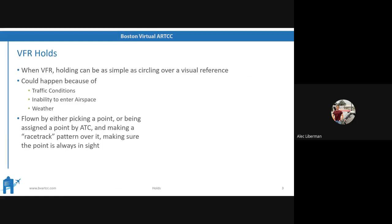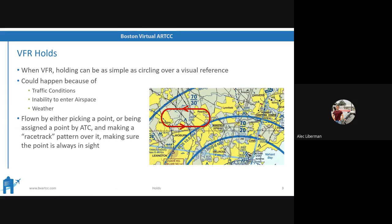VFR holds — this is pretty simple stuff. When you're VFR, holding can be as simple as flying over a reference on the ground visually in a circle. It happens because of traffic conditions, inability to enter airspace, or weather — for example, Oshkosh. Busy traffic, they'll have everybody hold until they can get more airplanes in. You either pick a point or you're assigned a point by air traffic control and make a circle, oval, racetrack — whatever you want to call it — making sure the point is always in sight. Really no trick to this one.